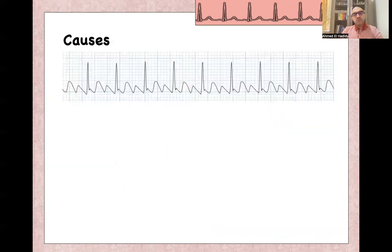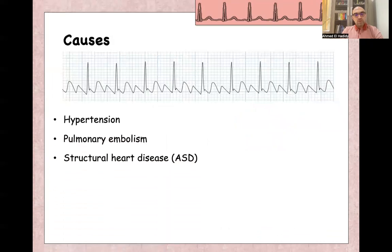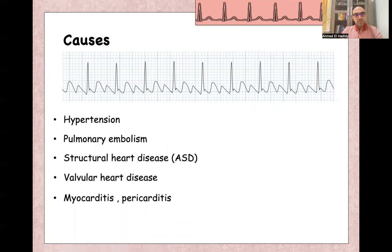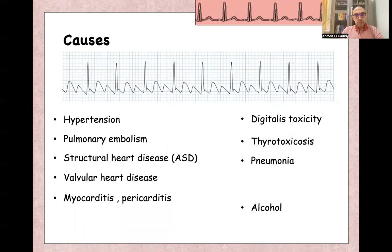Causes of atrial flutter include multiple etiologies: hypertension, pulmonary embolism, structural heart disease like atrial septal defect, valvular heart disease, myocarditis and pericarditis, digitalis toxicity, thyrotoxicosis, pneumonia, alcohol, and electrolyte imbalance.